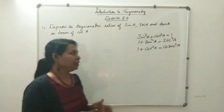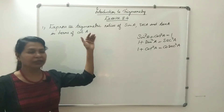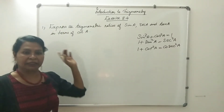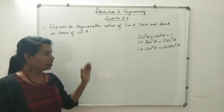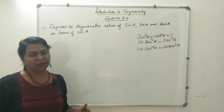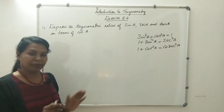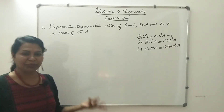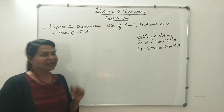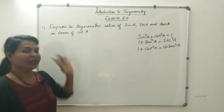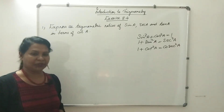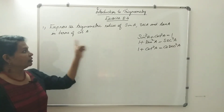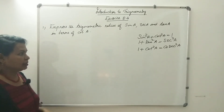Now, how do we do this? The trigonometric ratio of sin is to be expressed in terms of cotA. We use the identity where the relationship between sin and cot is established. That is why we use this identity.